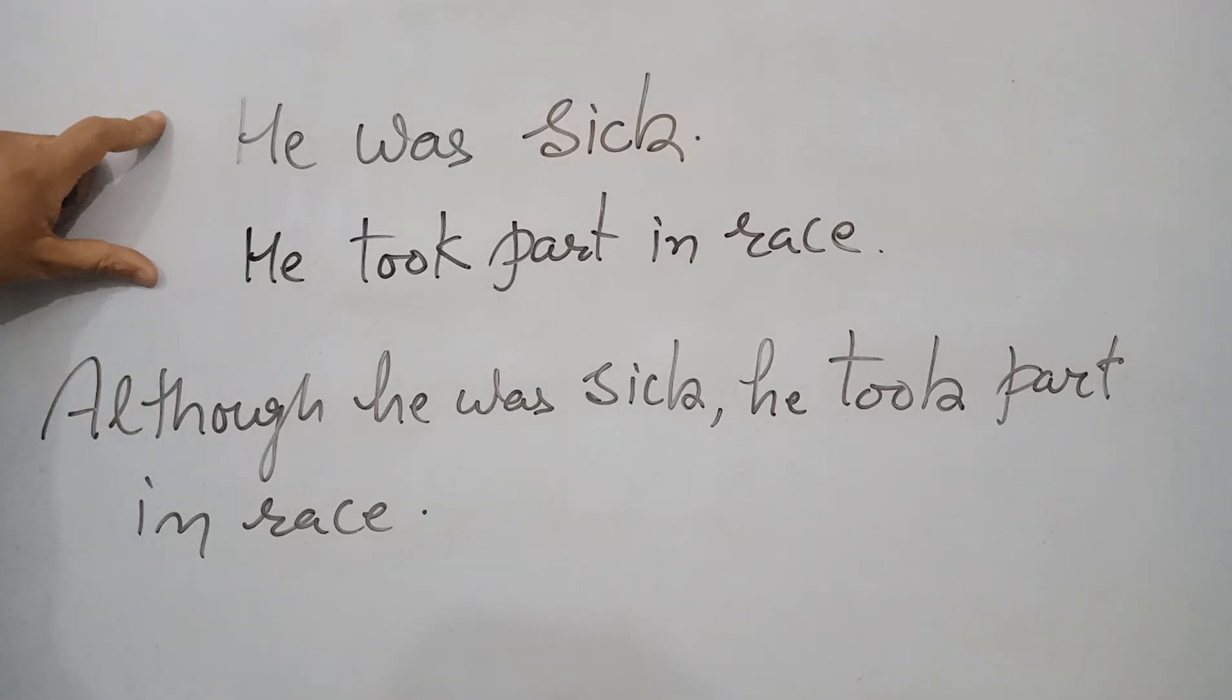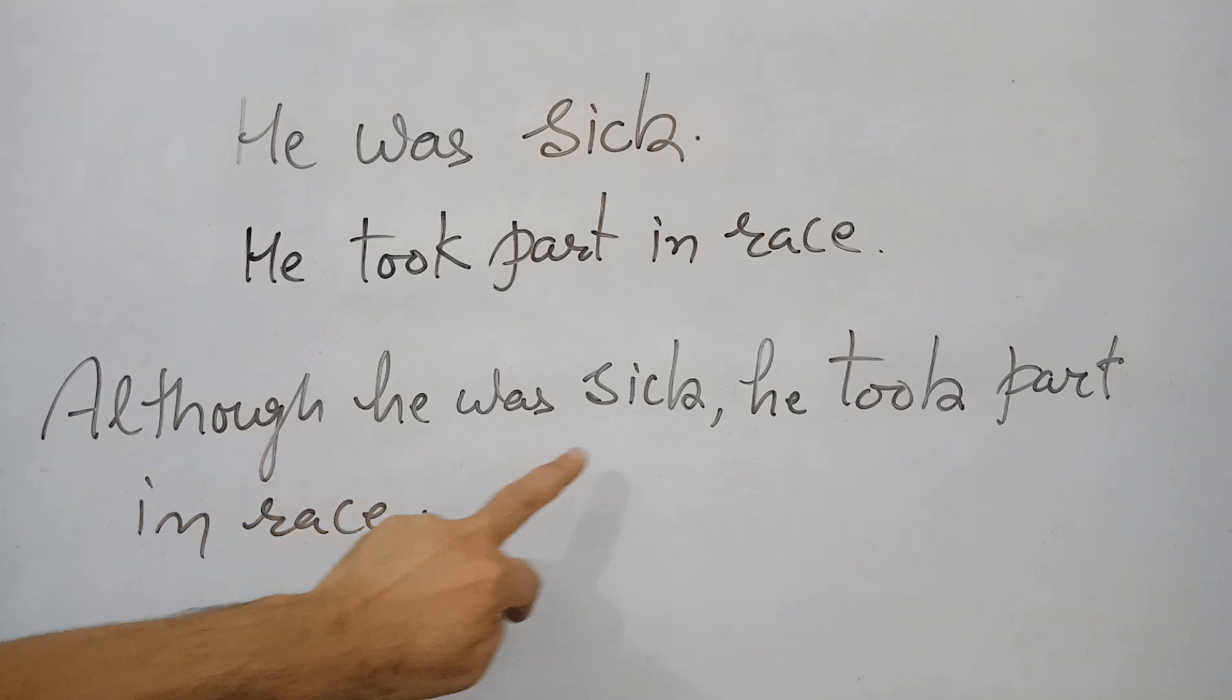Now look at first two sentences. They are simple: He was sick, he took part in race. Both statements are contradictory. First is he was sick, second is opposite, he took part in race. So now both sentences can be combined using although: Although he was sick, he took part in race. So contrast statement has been shown here.